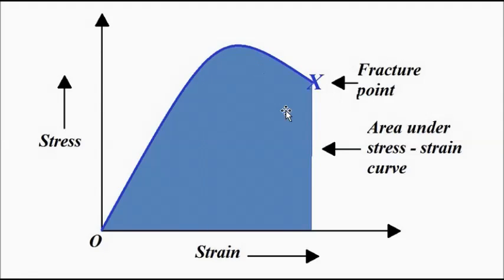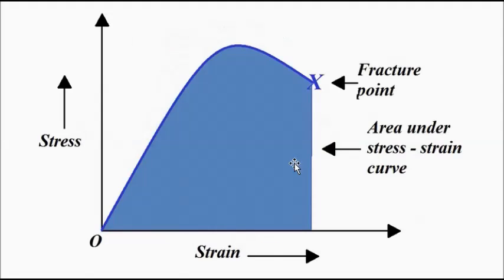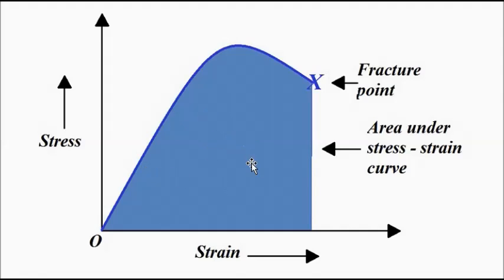The shaded blue region — the area under the second stress-strain curve — is larger compared to the red region of the first curve. Higher area means a higher value of toughness. So the second material has high toughness, meaning a higher capacity to absorb energy under applied tensile stress up to the point of fracture. The first material has low toughness and therefore low energy absorption capacity.